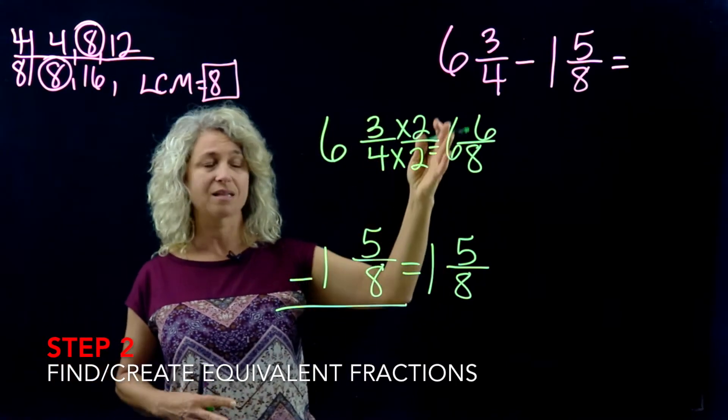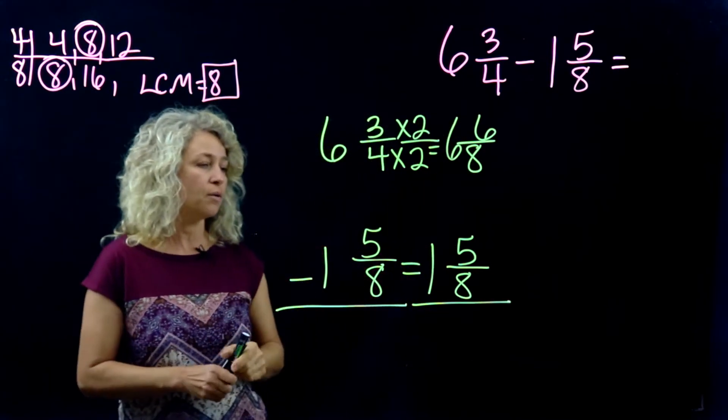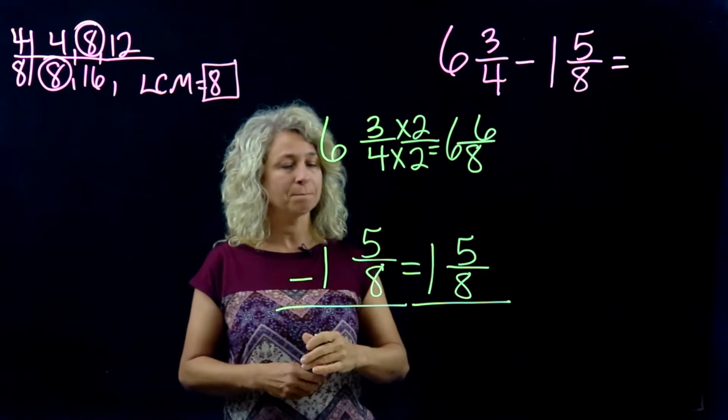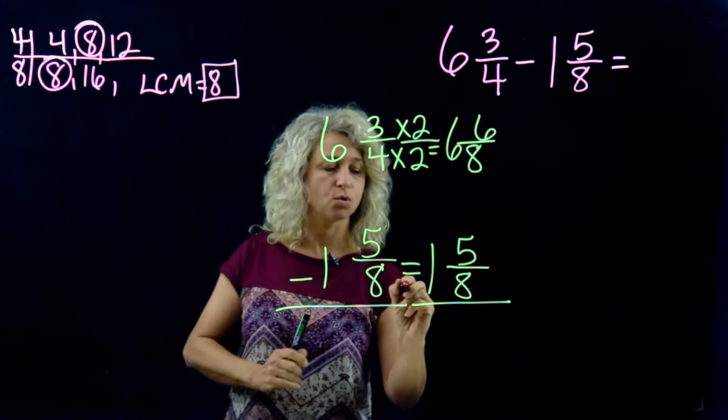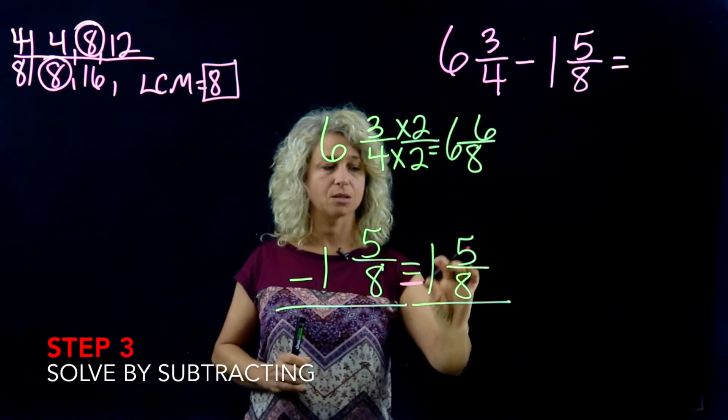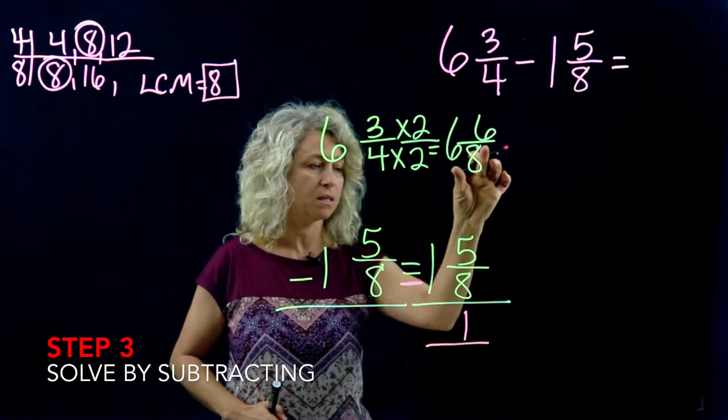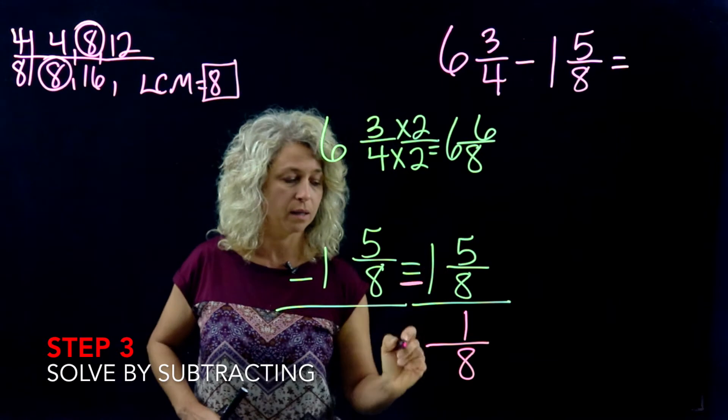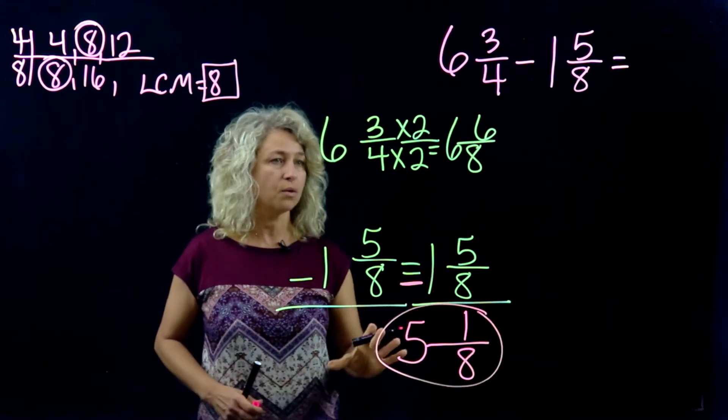Here is our problem. It's a little crowded, but we need to make sure that we understand this is subtraction. We are subtracting 6 6/8 minus 1 5/8. Six minus five is one, the denominator stays the same. Six minus one is five. So here is an example of subtraction.